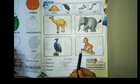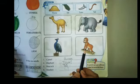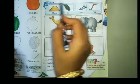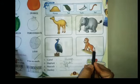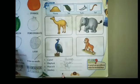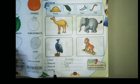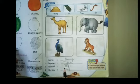What is this? This is the picture of a monkey. Which part is missing from here? Tail is missing. Now write tail here. M-O-N-K-E-Y, monkey. Tail.